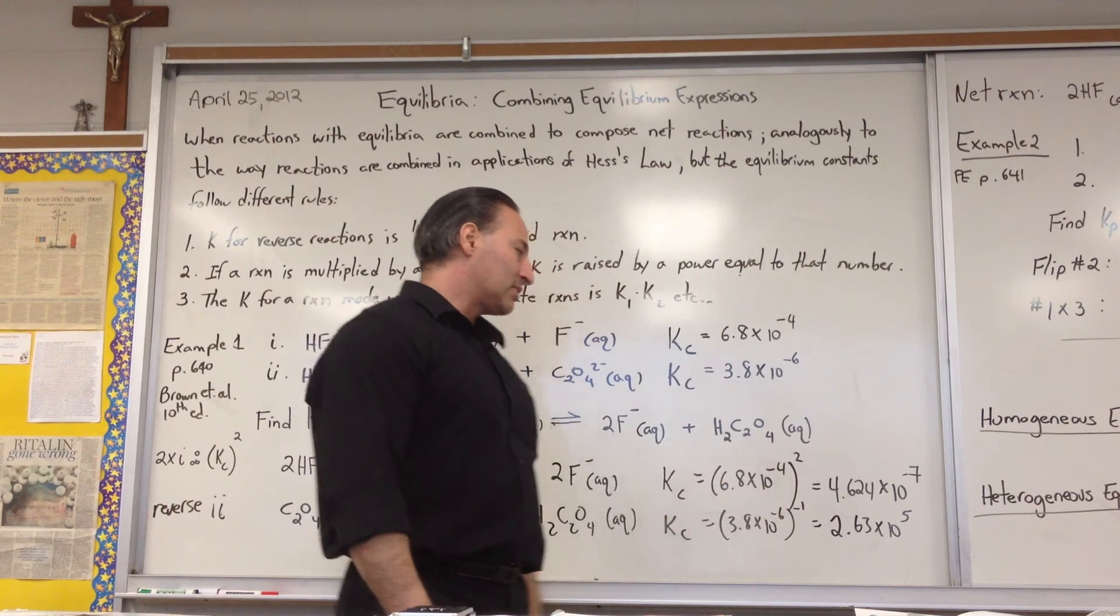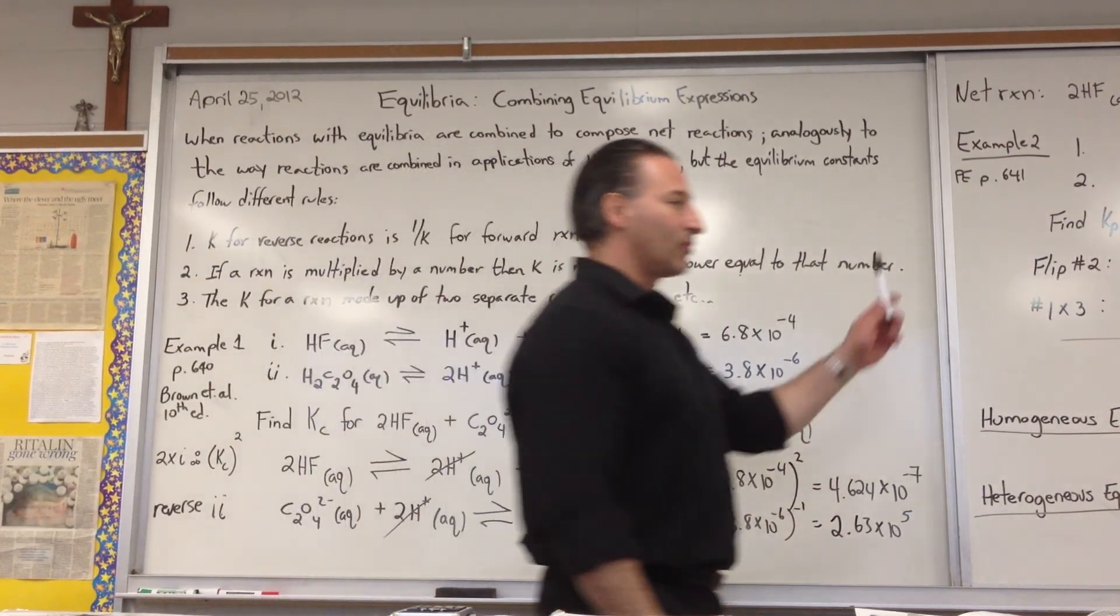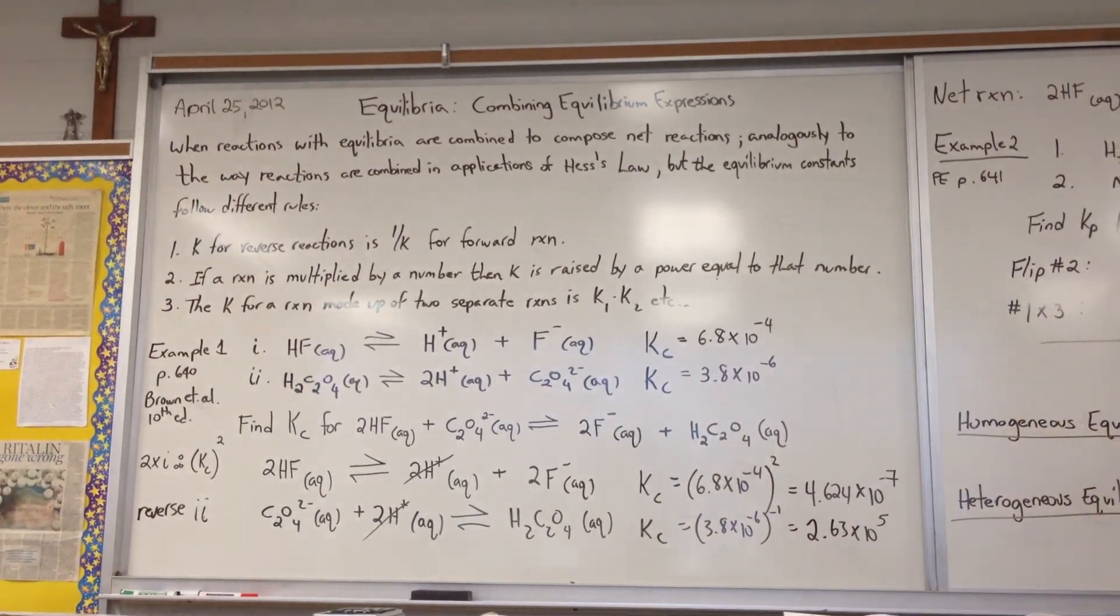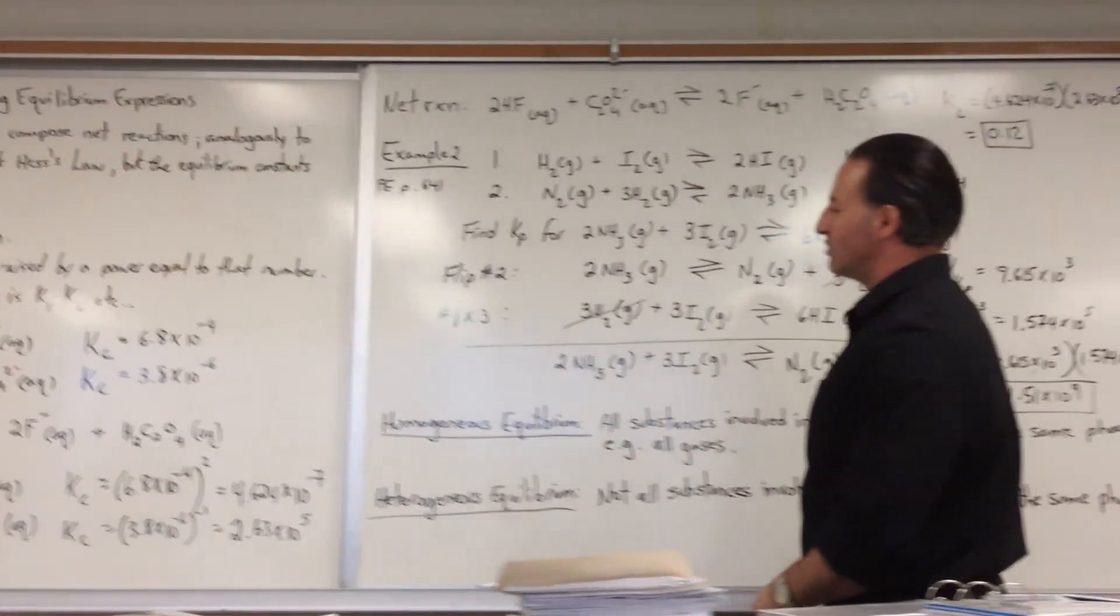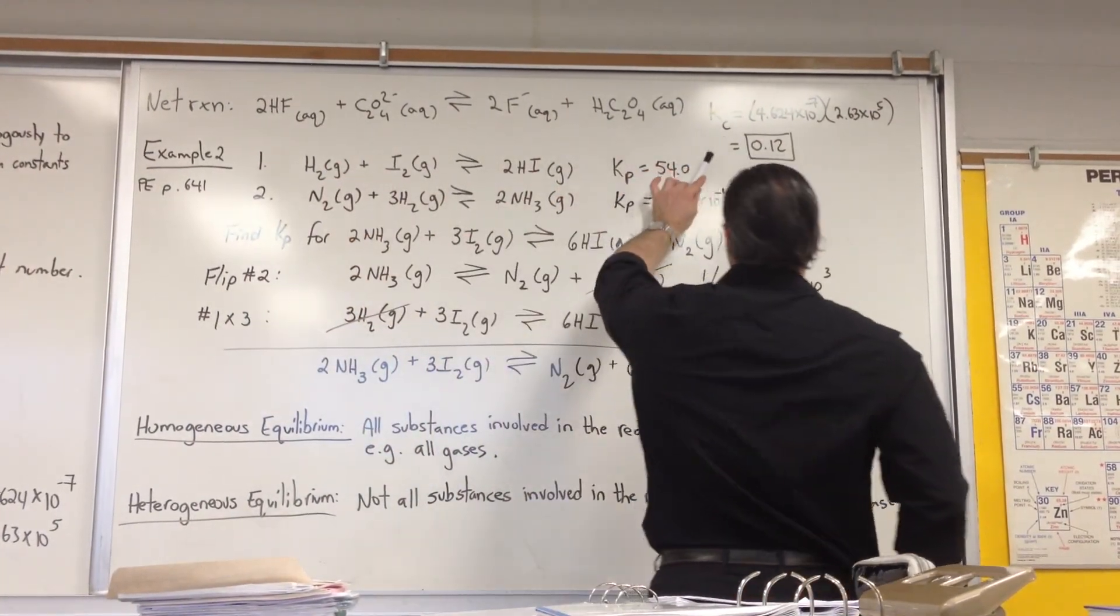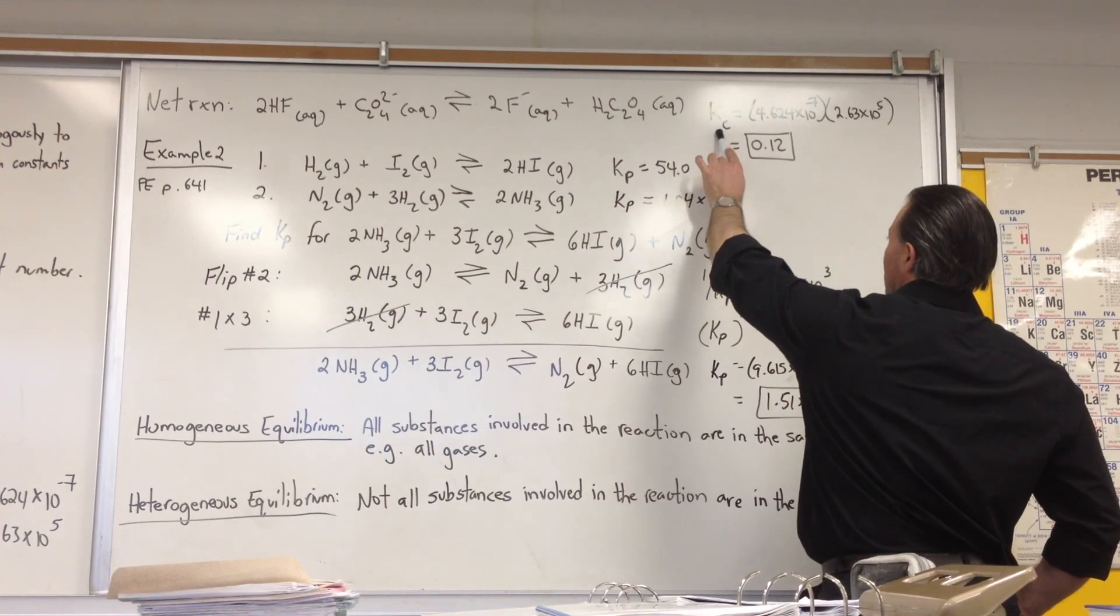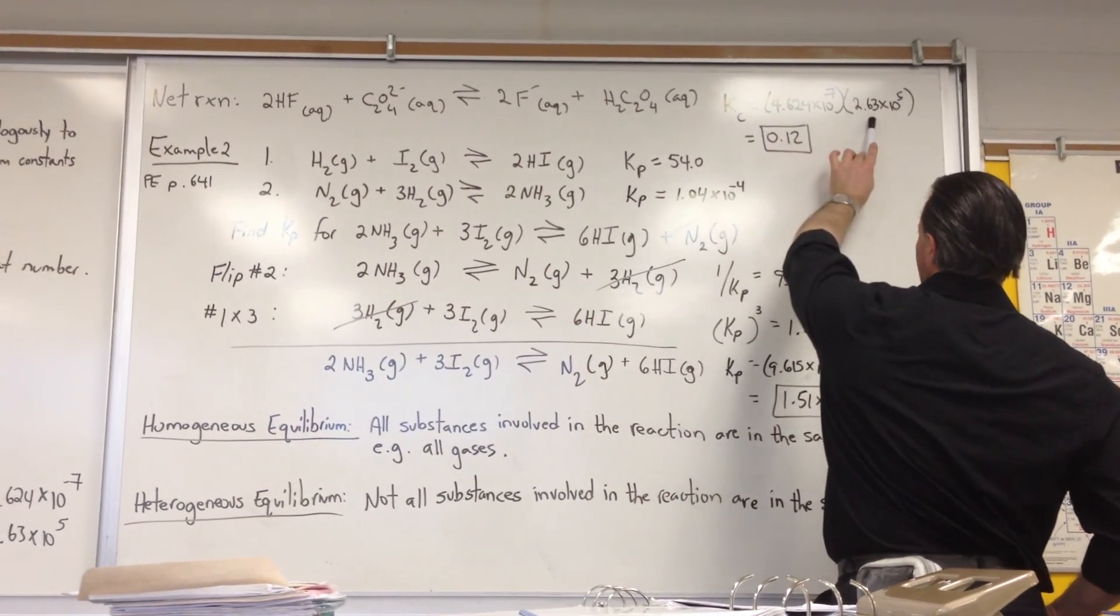These are the two equilibrium constants for the two reactions that have been modified in that way. The net reaction appears at the top of the next board, is obtained by cancelling hydrogen. So the net reaction that we get is here. And the net case, the KC equilibrium constant is based on multiplying the K for the first and the second reaction. So you get a value of 0.12.